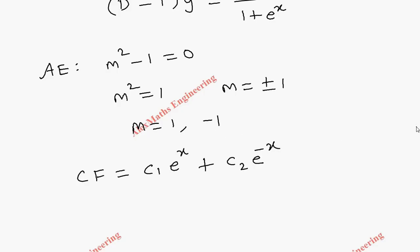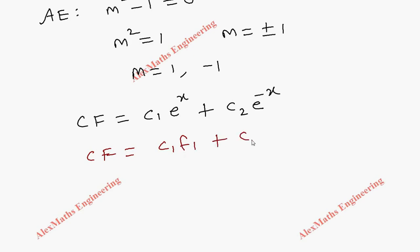Taking the first value as 1 and the second value as -1, the complementary function is c1·eˣ + c2·e^(-x). Comparing this with the general form c1·f1 + c2·f2, we get f1 = eˣ and f2 = e^(-x).